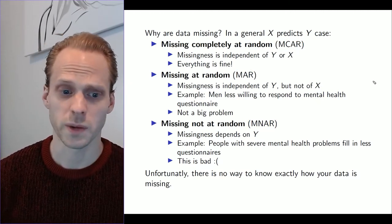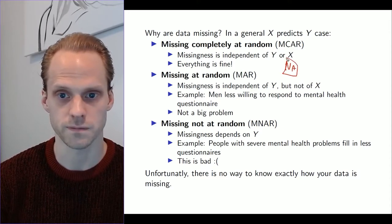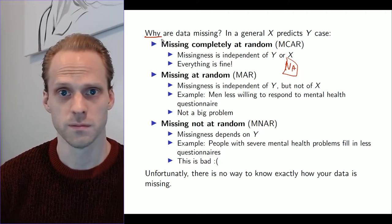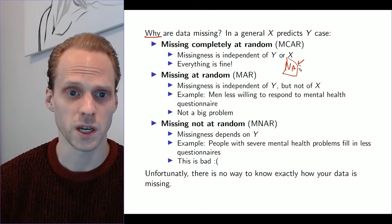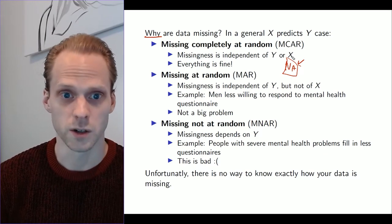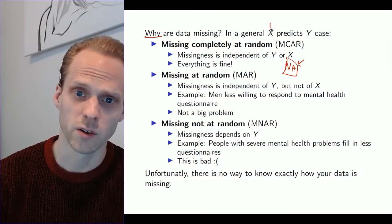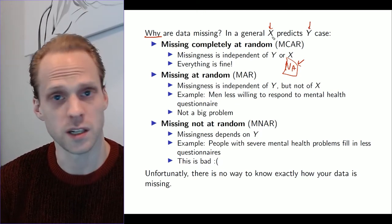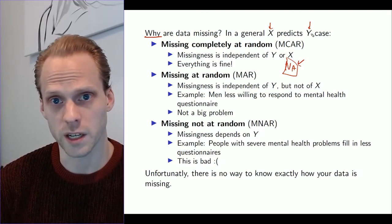The main thing to worry about when you have missing data, when you have NAs in your data set in R, is why are there data missing? And that's a big and important question. There can be roughly three reasons why your data is missing. We're going to talk about a general X predicts Y case, where X might be external variables like grouping variables or gender, and Y are the indicators.